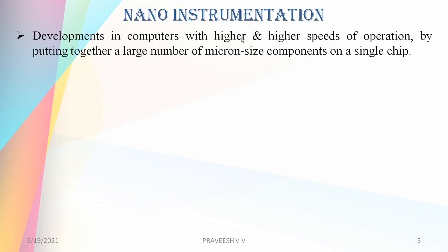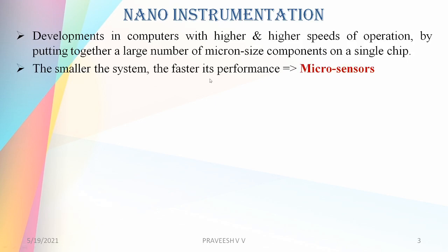One of the successful accomplishments is the development in computers with higher and higher speeds of operation, which happened by putting together a large number of micron-size components on a single chip. Biological science has enabled man to understand nature's biological processes better than ever. Inspired by the fact that smaller the system the faster the performance, considerable research is undertaken in this area.